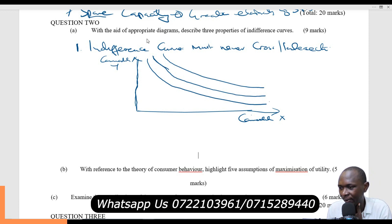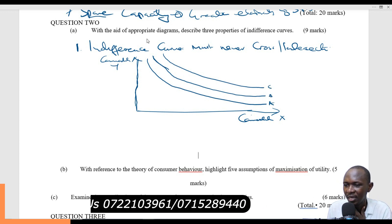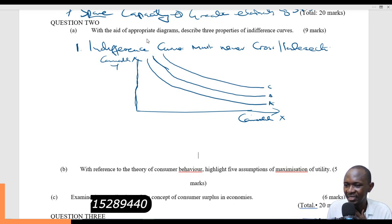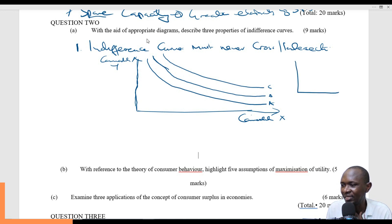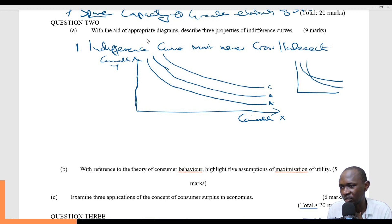So we have indifference curve A, we have B, we have C. These are indifference curves, and it is these indifference curves that we are saying must never intersect. We cannot have a situation where one indifference curve cuts across the other one.